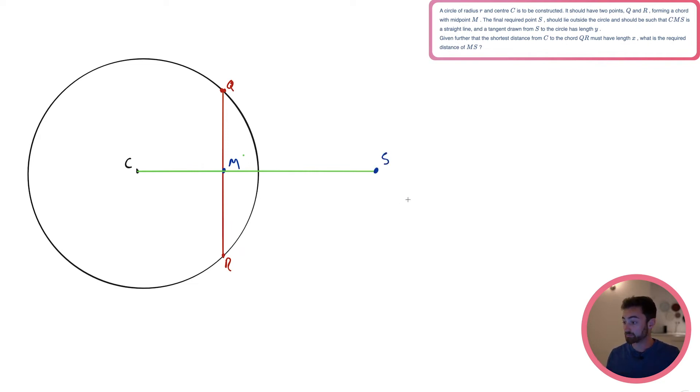It then says, a tangent drawn from S to the circle has length Y. So if I was to draw a tangent from S to the circle, it's going to have length Y. And remember, if I drew a tangent here, it would have length Y and it would be the same length here. So let's just draw one going down here. So what it means is the length from S to where it hits the circle here has length Y. So you can almost see the distance here would be Y. Fantastic.